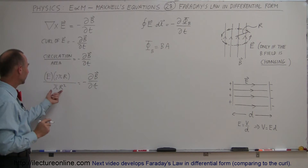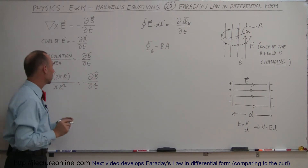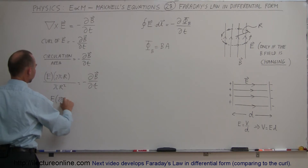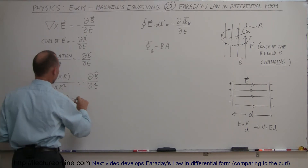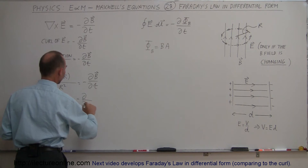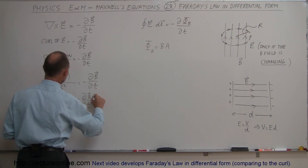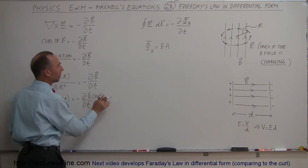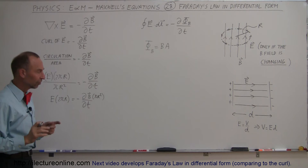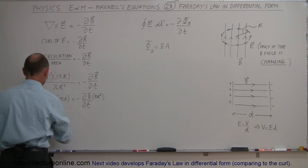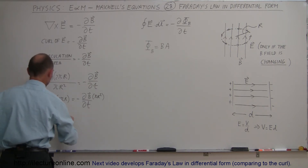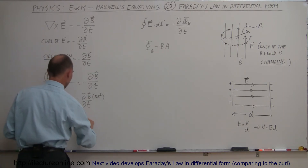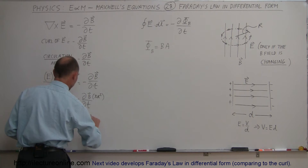If we move terms to the other side of the equation, we get the electric field times 2πr is equal to minus the changing with respect to time of the B field times the area, πr². And remember, the B field times the area is equal to the flux. So we can say the electric field times 2πr is equal to the negative of the changing flux of the B field with respect to time.